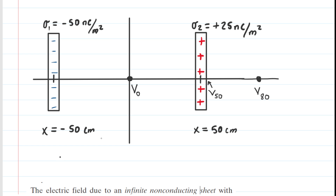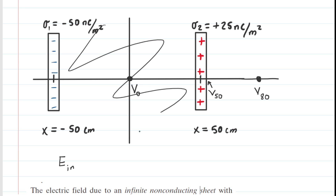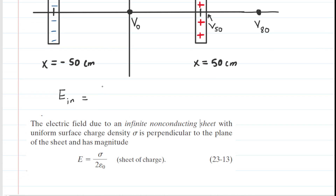Our job is to calculate the electric field located between the plates — we'll call that E_inside. Whatever that electric field is, it will have a constant value, but it will be created by two different sheets of charge. We would take the surface charge density on plate one, divide by two times the permittivity constant, and then add that to the surface charge density on plate two divided by that same constant.